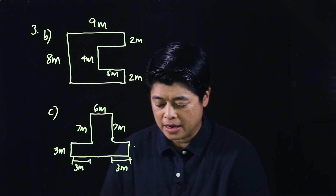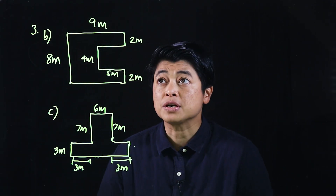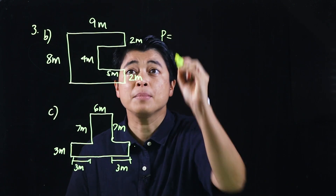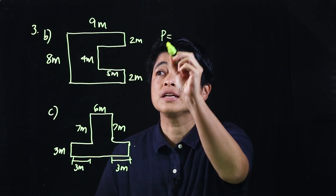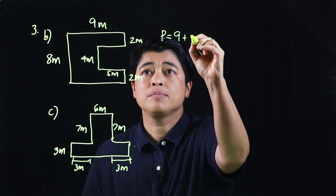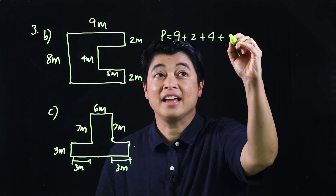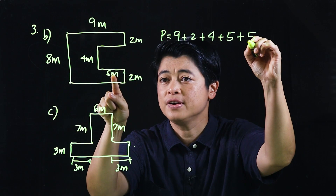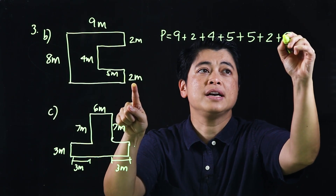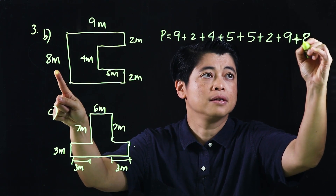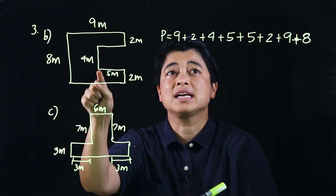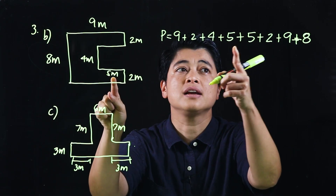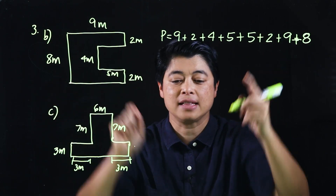Here we're asked to find the perimeter and the area. To find the perimeter, we can start adding the sides: 9 plus 2 plus 4 plus 5 — and I skipped the 5, so I'll put that back — plus another 5, then a 2. So again this is 9, and a 2, I skipped the 5, so: 5, then another 5, then a 2, then a 9, and that's 8.